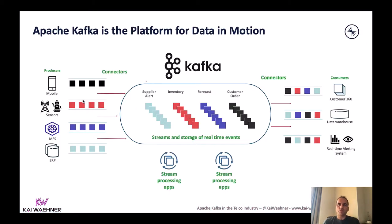Apache Kafka is a platform for data in motion — a real-time messaging platform at scale. You can process high volumes of data like gigabytes per second with low latency, around 10 milliseconds end-to-end. But Kafka is much more than just a messaging layer. It's an event streaming platform that allows you to continuously process data. The real added value doesn't come from just sending data from A to B; it comes when you process and correlate data in real time.